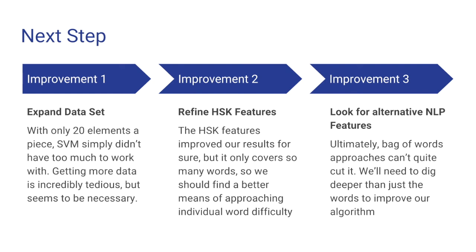So how can we improve this? First, we really need to expand the data set — 60 data points really just isn't enough. Secondly, the HSK features seem to be a little lacking: there are only seven classifications for HSK and they don't necessarily cover every word in the dictionary. In the future, I'll try to use frequency lists or more standard approaches to better assess the difficulty of individual words. And lastly — the ultimate conclusion of the project — bag of words simply doesn't cut it. We need features that give more insight into the grammar and complexity of the passage, which would entail employing things being done in natural language processing or other fields to find better, more interesting features.